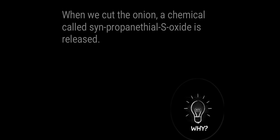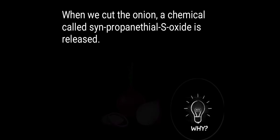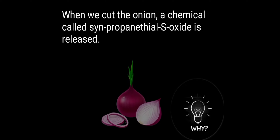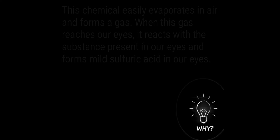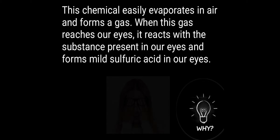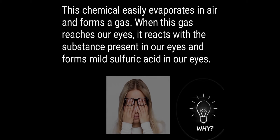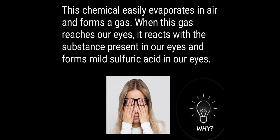When we cut the onion, a chemical called syn-propane-thiol S-oxide is released. This chemical easily evaporates in air and forms a gas. When this gas reaches our eyes, it reacts with the substance present in our eyes and forms mild sulfuric acid in our eyes.